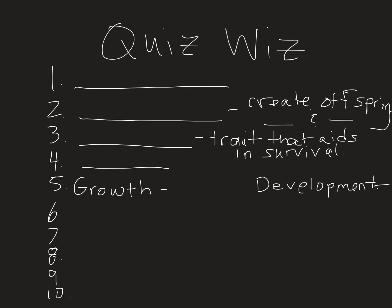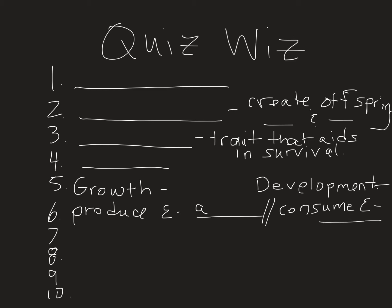We also mentioned how different organisms can either produce their own energy or have to consume to get energy. Do you know the science-y word for those that produce their own energy? I'll give you a hint — it begins with the letter A — and those that consume energy. Now I'm going to ask four questions about graphing and the scientific process. I gave you another mnemonic acronym for how to do graphing — two words that help us know what to put on which axis.